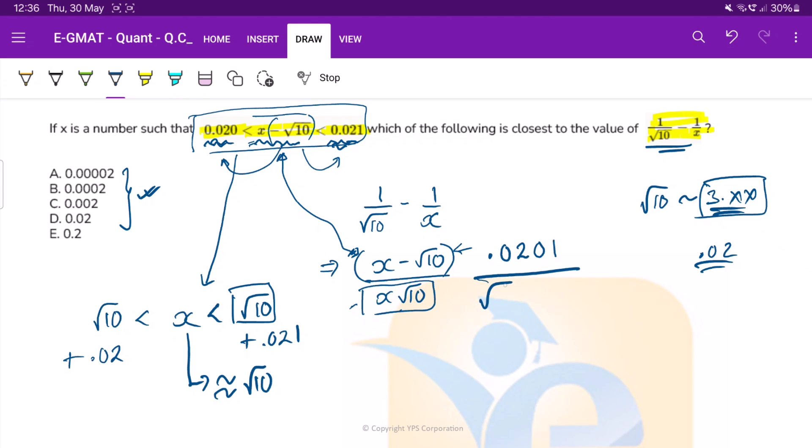And so what do we have? x can be considered to under root 10. We already have under root 10 here. So this becomes 0.0201 divided by 10, which effectively gives us 0.00201. So something on the lines of option C. So thus C becomes our answer.